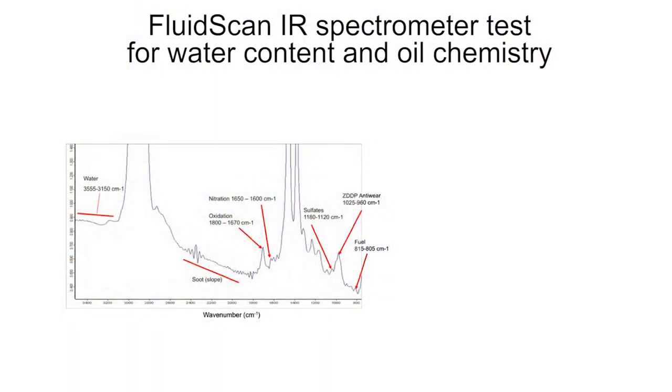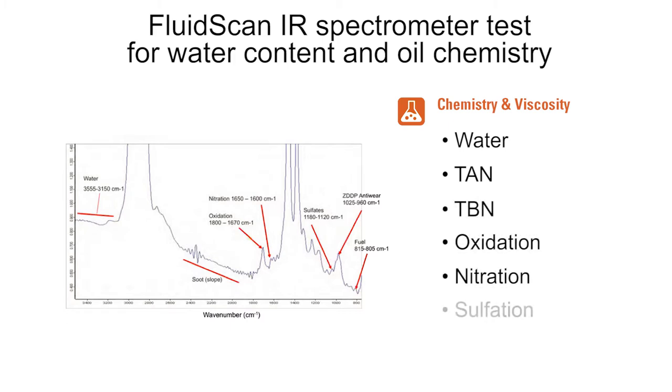All tests for water content and oil chemistry are done on the FluidScan infrared spectrometer. It measures water, total acid, total base, oxidation, nitration, sulfation, and other oil-specific properties.